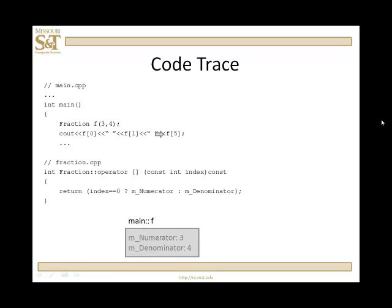So we're going to take a look first at f of 5. Then call the function index is 5. That returns the denominator and we put 4 into the output buffer. Then a space.